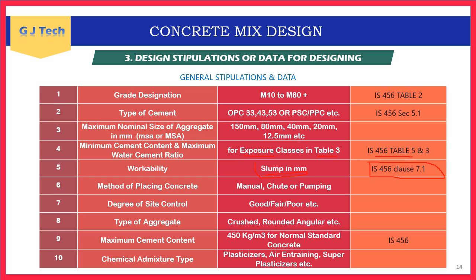When mineral admixtures are used, OPC content must not exceed 450 kg/m³, but overall cementitious content can exceed this value. OPC content must always remain below 450 kg/m³. Chemical admixture type — plasticizers, air-entraining agents, or superplasticizers — must also be clearly specified.